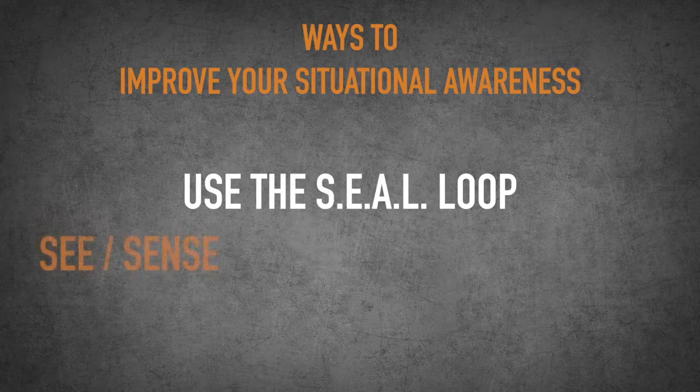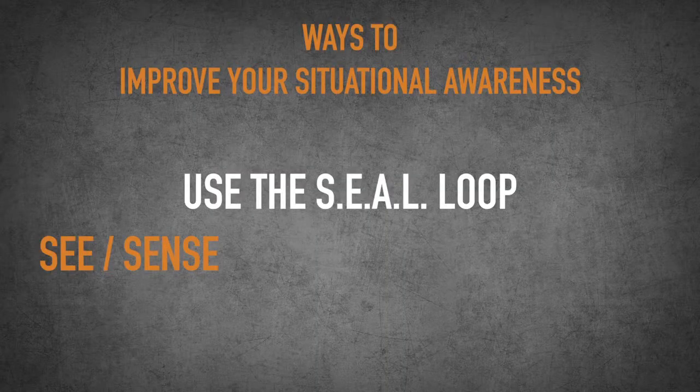The SEAL loop stands for: S — see or sense what's going on around you. Not just seeing, not just using your eyes, but using all of your senses — your sense of smell, your feeling, practicing meditation, being present with what's around you. You're going to be able to sense stuff a lot faster and easier than you can see it. The E in SEAL loop is to evaluate. After you see or sense what's going on around you, you need to evaluate quickly what you should or should not do in that situation.